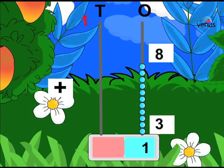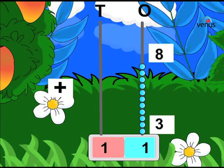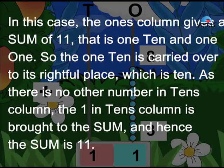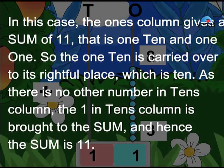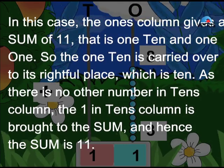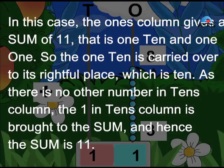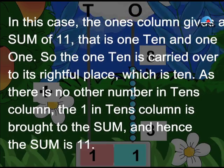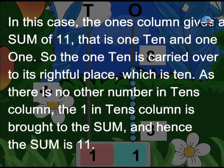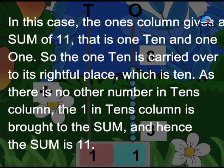Example 1: Add 8 plus 3. It equals 11. In this case, the ones column gives a sum of 11, that is one ten and one one. So the one ten is carried over to its rightful place, which is ten.